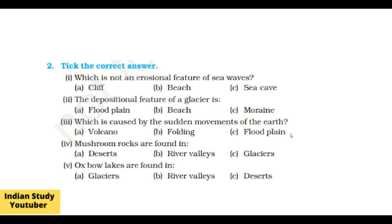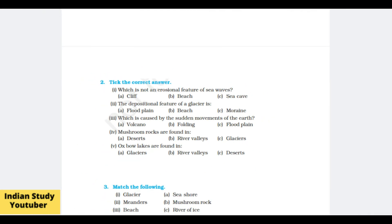Question 2 — tick the correct answer. Let me minimize the screen a little. Which is not an erosional feature of sea waves? The right answer is beach. The depositional feature of a glacier is moraine. Which landform is caused by the sudden movement of the earth? The right answer is volcano. Mushroom rocks are found in desert areas. Oxbow lakes are found in river valleys.